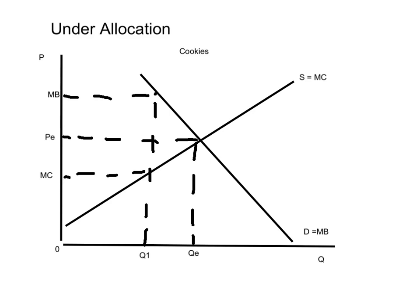Now let's look at an under-allocation of resources still within the market for cookies. We can see that the quantity has shifted from the quantity equilibrium to Q1, and at Q1, the marginal benefit is greater than the marginal cost, which means that resources are under-allocated at Q1.